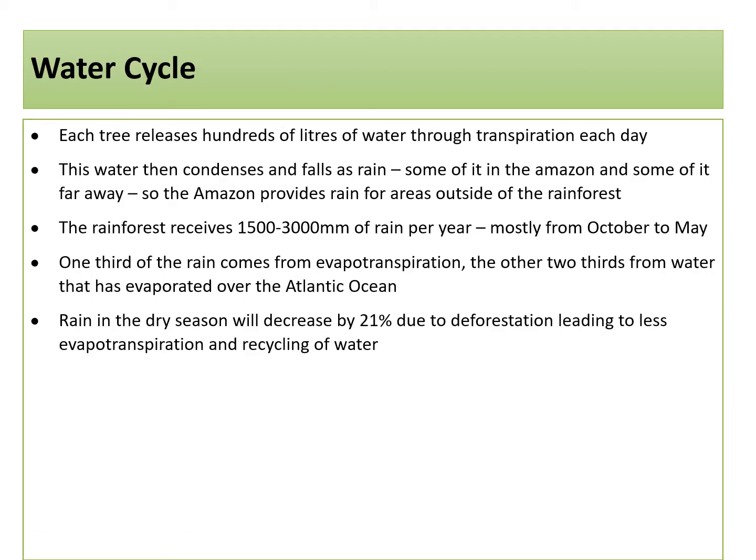The water cycle in the Amazon rainforest. Each tree releases hundreds of litres of water through transpiration each day, and this water will then condense and fall as rain — some of it in the Amazon, and some of it far away — so the Amazon provides rain for areas outside of the rainforest. The rainforest receives 1,500 to 3,000 millimetres of rain each year, with most of this coming from October to May in the wet season. One third of the rain comes from evapotranspiration and the other two thirds from water that has evaporated over the Atlantic Ocean. Rain in the dry season will decrease by 21% due to deforestation, as deforestation means less evapotranspiration and recycling of water, which is a key part of the water cycle in the Amazon.